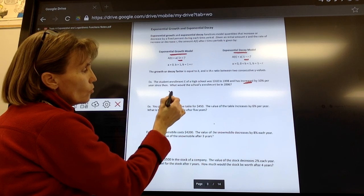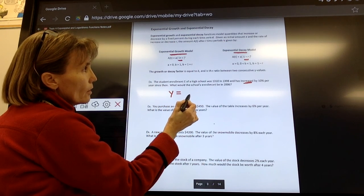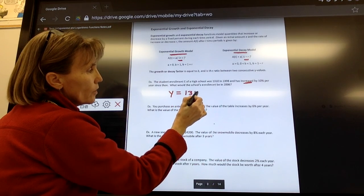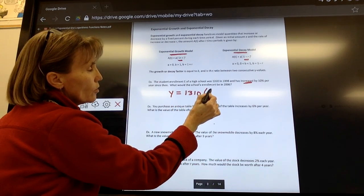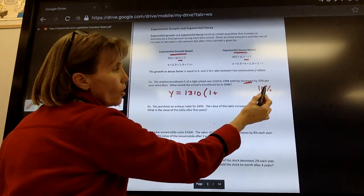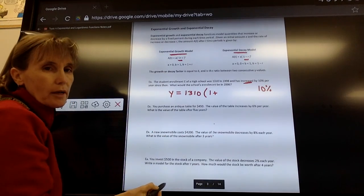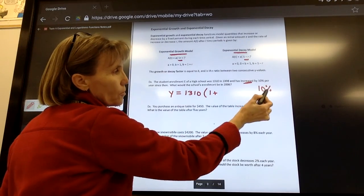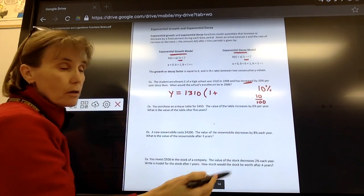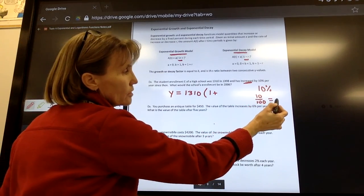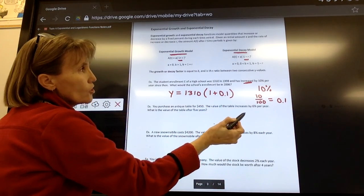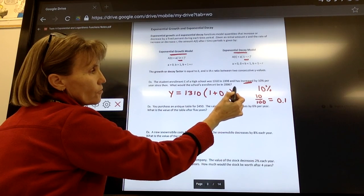I'm going to say that the new growth, I'm just going to use Y for that, equals A. A is the initial enrollment, so 1,310, and then it's going to be 1 plus the rate of growth. Since it's 10% as the rate of growth, we always plug it into the formula as a decimal. To get rid of the percent sign, we divide by 100. The word percent means out of 100. So 10 divided by 100 is equal to the decimal 0.1. That's the value that we put into our equation, and then we put T in for time.